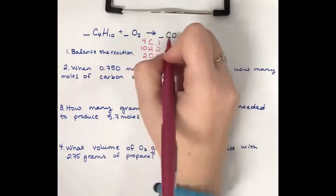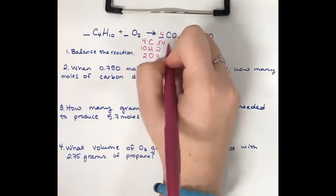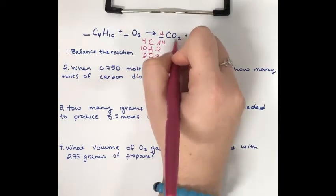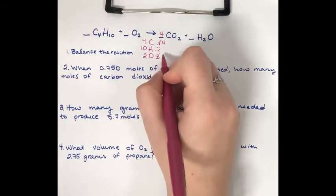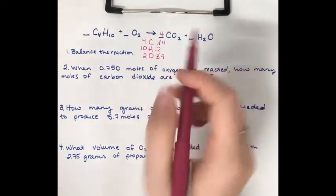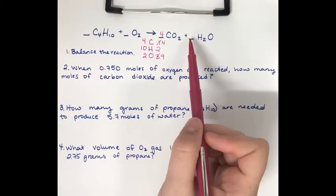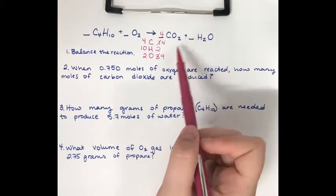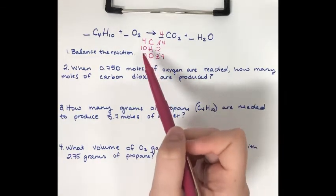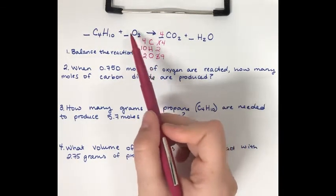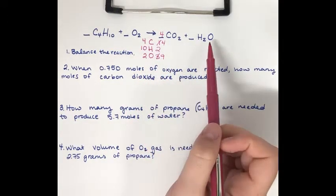So I'm going to start. I'll put a four here — that makes it four carbon, but I've also changed oxygen. Four times two is eight, plus one is nine. Now if I put a five in front of the hydrogen, that's going to leave my oxygen as an odd number. And if I have an even number over here, I can only ever have an even number. So I know that's not going to work.